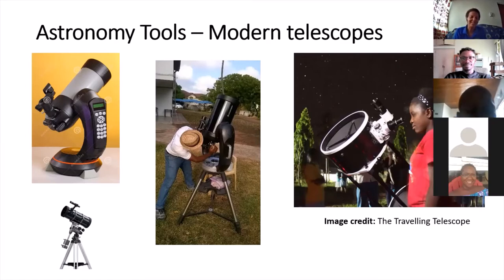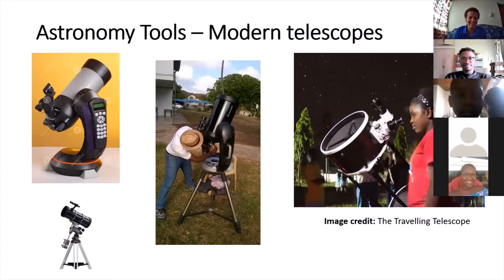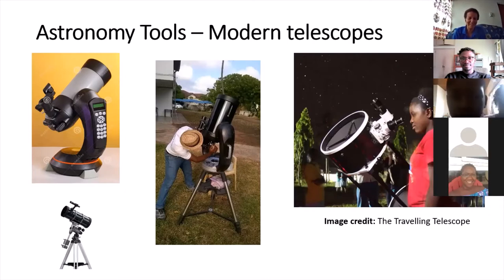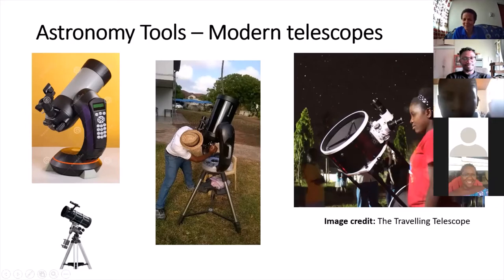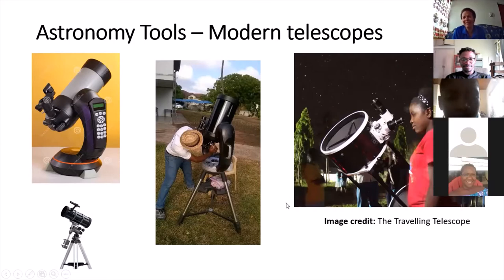Since then, technology always improves. The most modern telescopes nowadays use mirrors — a mirror and a lens rather than two lenses — and instead of everything being done by hand, you can use computers to control the telescope and find exactly what you're looking for. You can also have cameras to take pictures. The one in the middle with the guy with the hat is the telescope at the planetarium, and on the right is a telescope used by a group in Kenya — it's a very big telescope with a mirror at the bottom and a lens up top.